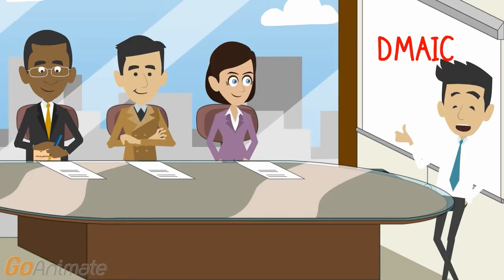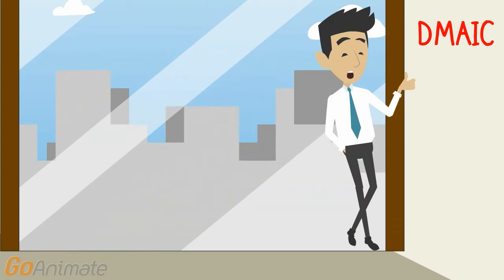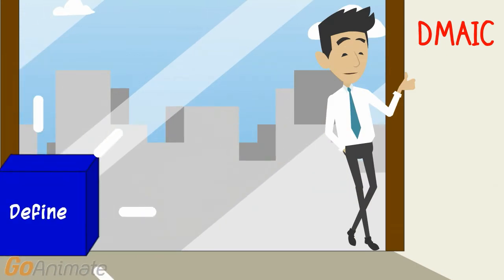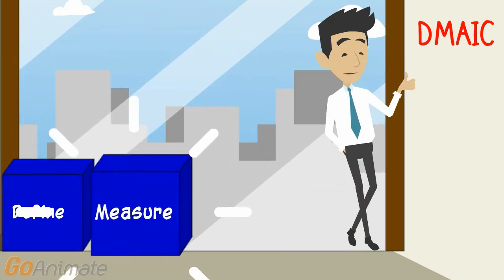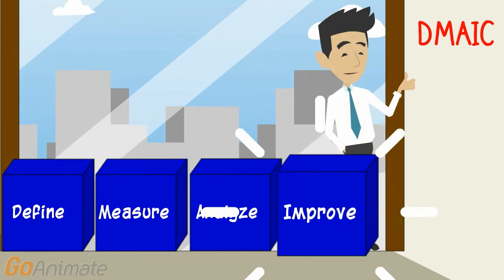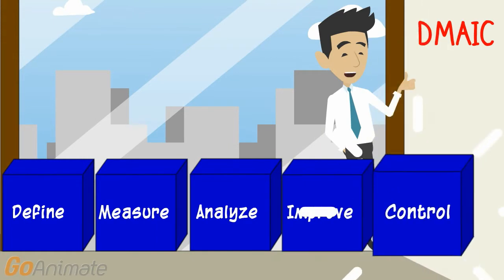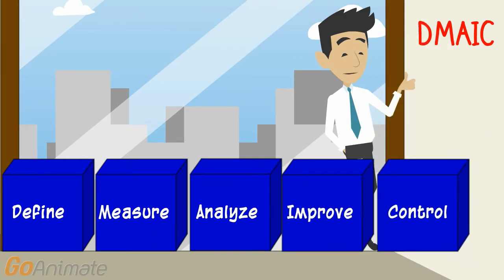Hello, ladies and gentlemen. Today we are going to talk about a five-step improvement process known as DMAIC. DMAIC stands for Define, Measure, Analyze, Improve, and Control. In this module, we will provide a brief introduction of the Analyze Phase.